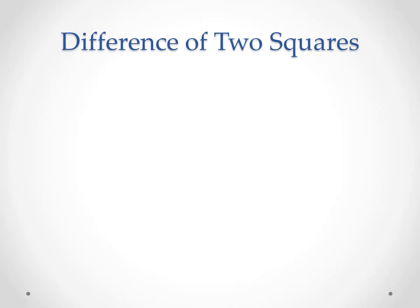We're going to look now at a couple of special cases — we're still multiplying out binomials, but these have some special properties that let us skip a couple of steps. The first one we're going to look at is called difference of two squares. Let's jump straight into a couple of examples and talk about why it has that name.